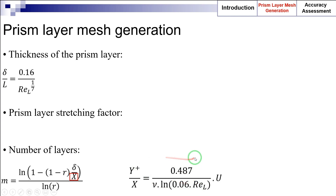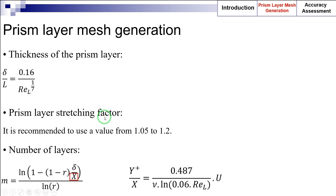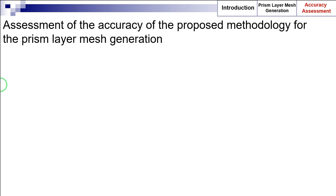Finally, we have the prism layer stretching factor r. This parameter is directly specified by the user. It is recommended to use a value from 1.05 to 1.2.